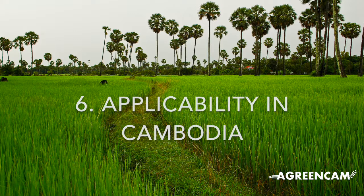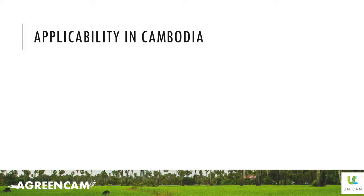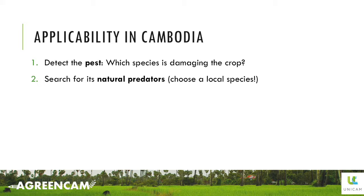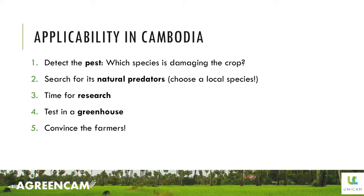Now that we have understood biological control, let's see the steps we should follow to implement it in Cambodia. Obviously, the first step is to identify the pest — to know which species is causing damage to the crops. Then we need to think about its natural predators. As Dr. Elena has told us, it's very important that the natural predator is a local species. Once we have chosen it, it's time to investigate and design the application plan. Before developing it in real agricultural fields, we will need to test our plan in a greenhouse. If it works, all we have left to do is convince the farmers.